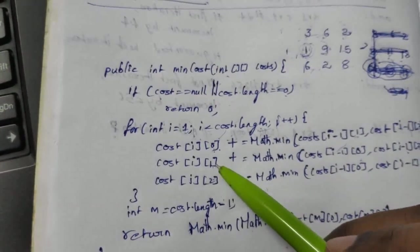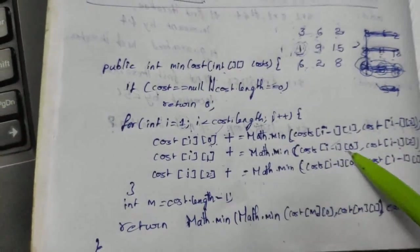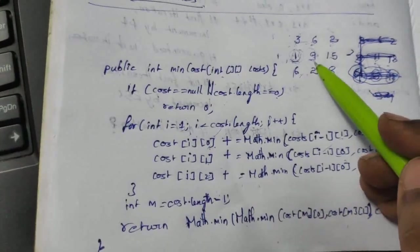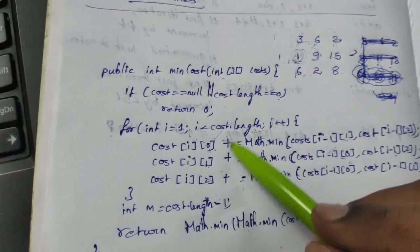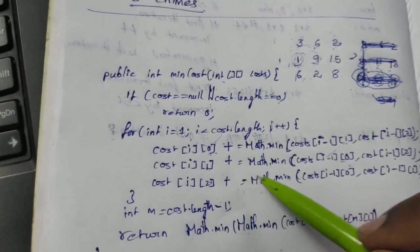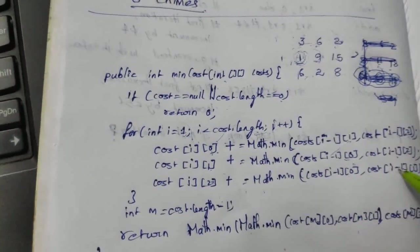Similarly if we are going for 1 we are going to take minimum of 0 and 2. For example this one we are going to take minimum of 3 or 2. Similarly if it is 2 we are going to take minimum of 0 and 1.